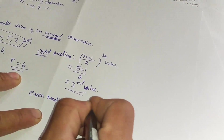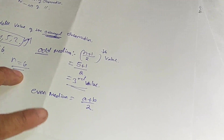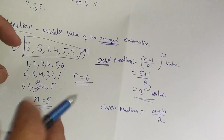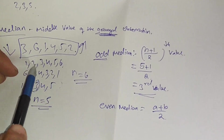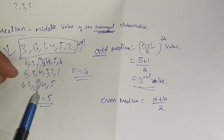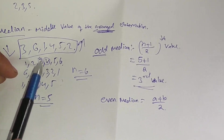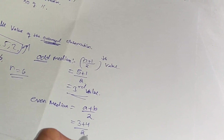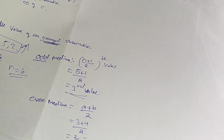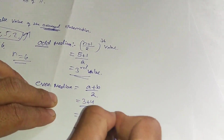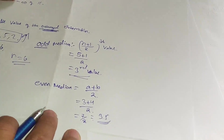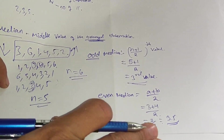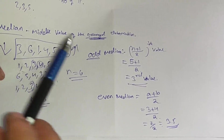For even median, the formula is (a + b) / 2, where a and b are the two middle values. For observations 1, 2, 3, 4, 5, 6 — the two middle values are 3 and 4. So median = (3 + 4) / 2 = 7 / 2 = 3.5. Therefore 3.5 is the median.